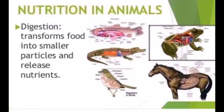Chapter 7: Animal Nutrition. What is nutrition? Nutrition is the process by which organisms obtain energy in the form of food for their growth, repair, and maintenance.